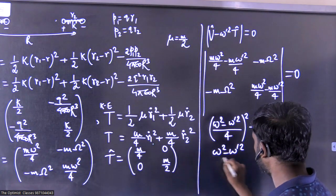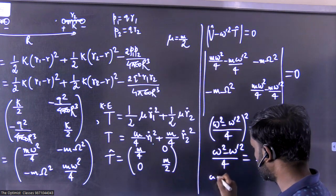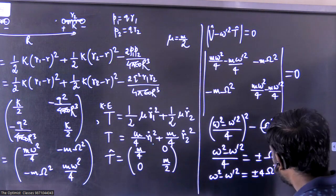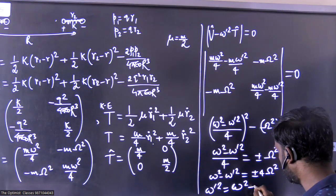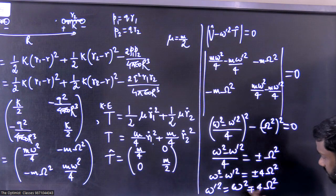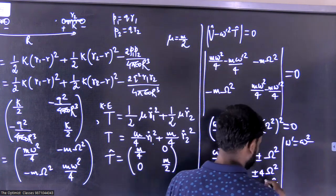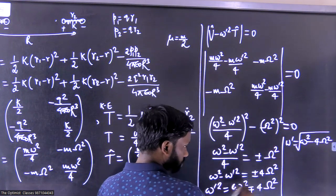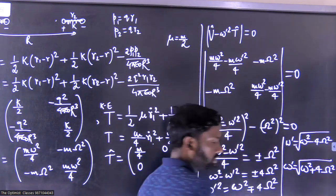Using the plus and minus signs separately, we get two normal mode frequencies: ω'₁ = sqrt(ω² - 4Ω²) and ω'₂ = sqrt(ω² + 4Ω²). These are the two normal mode frequencies of oscillation of the diatomic molecule system, where ω is the individual dipole SHM frequency and Ω is defined from the dipole interaction strength.